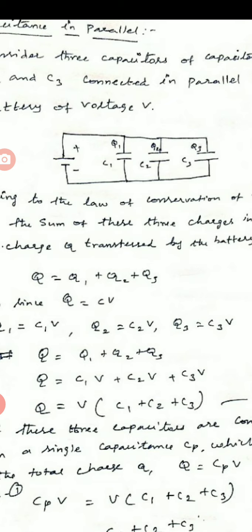Let the charge stored in the three capacitors be Q1, Q2 and Q3 respectively. According to the law of conservation of total charge, the sum of these three charges is equal to the charge Q transferred by the battery.